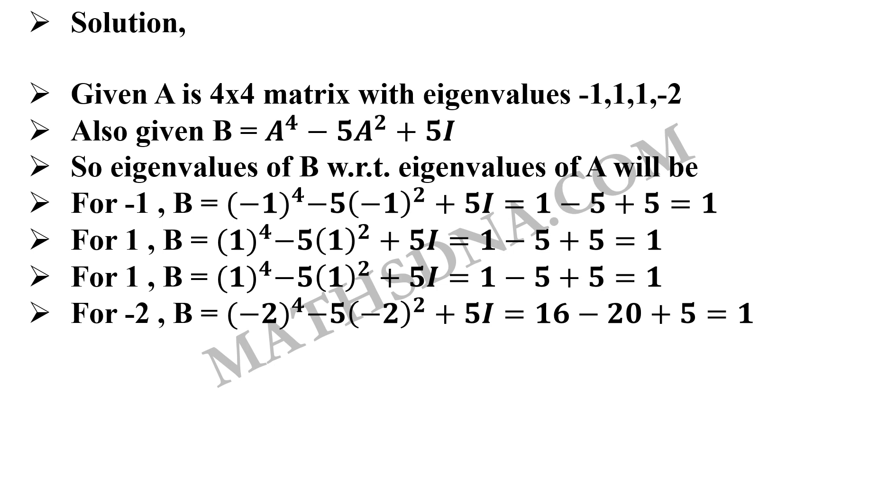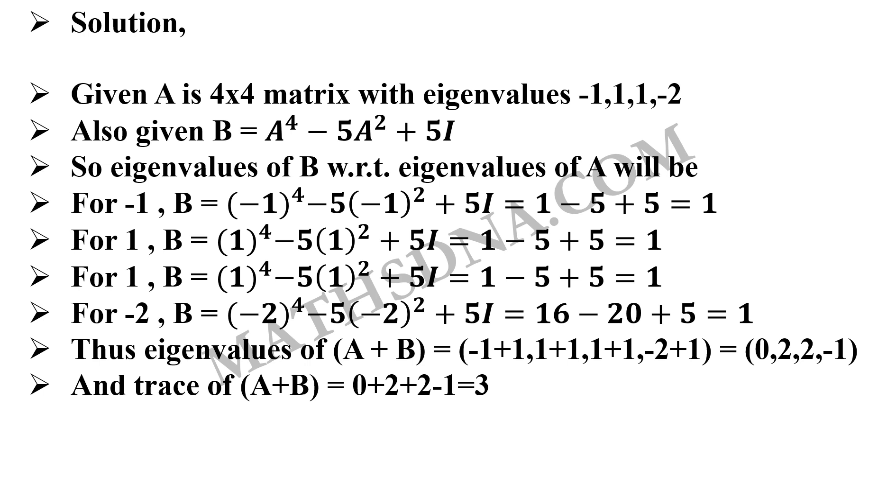Now, we have to find the trace of the A+B matrix. So firstly, we find the eigenvalues of A+B. Adding eigenvalues of A and B component-wise, we get the eigenvalues of A+B as 0, 2, 2, and -1. The trace of A+B will be 0 + 2 + 2 - 1 = 3, which is option C. Easy. Thank you.